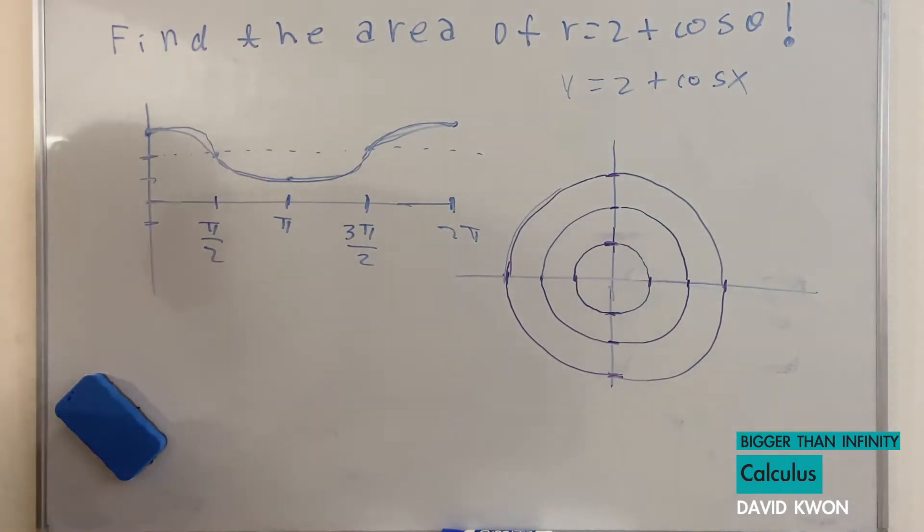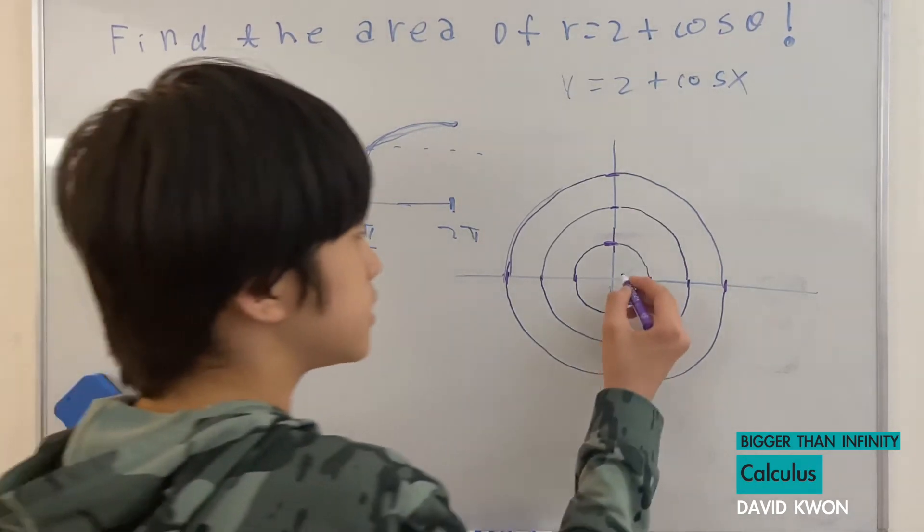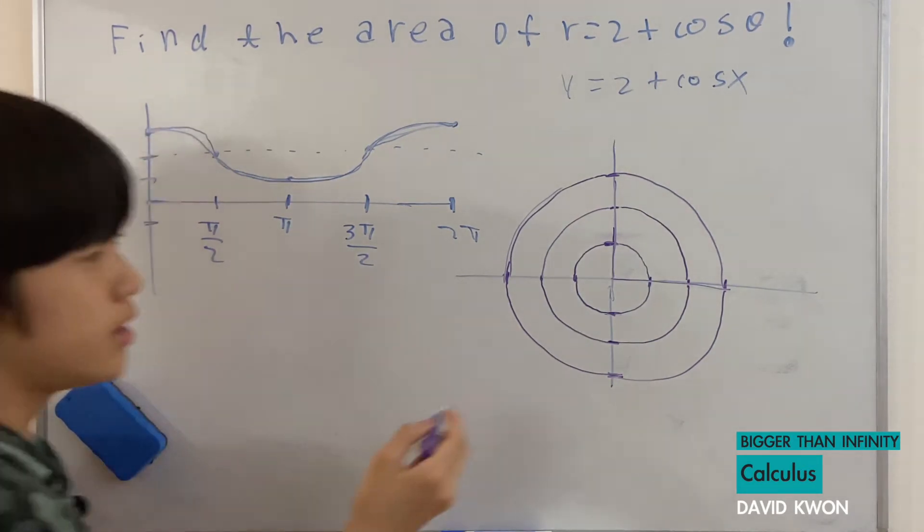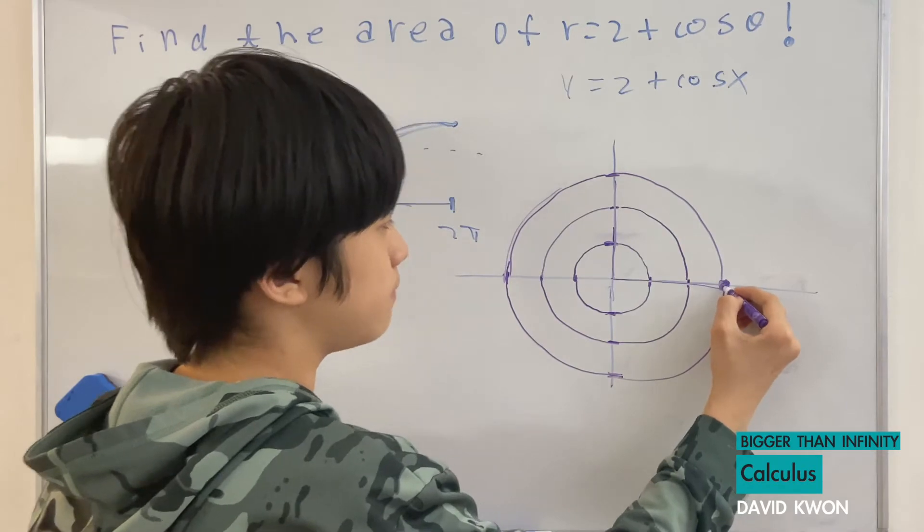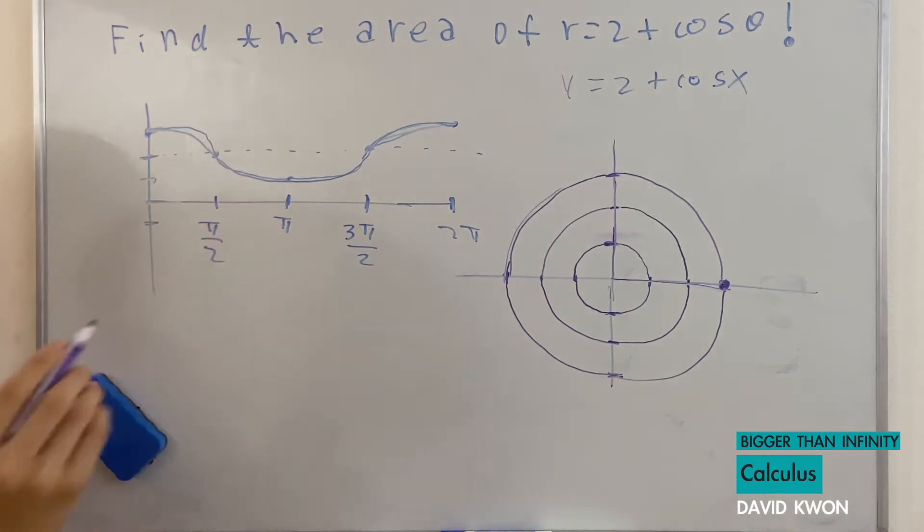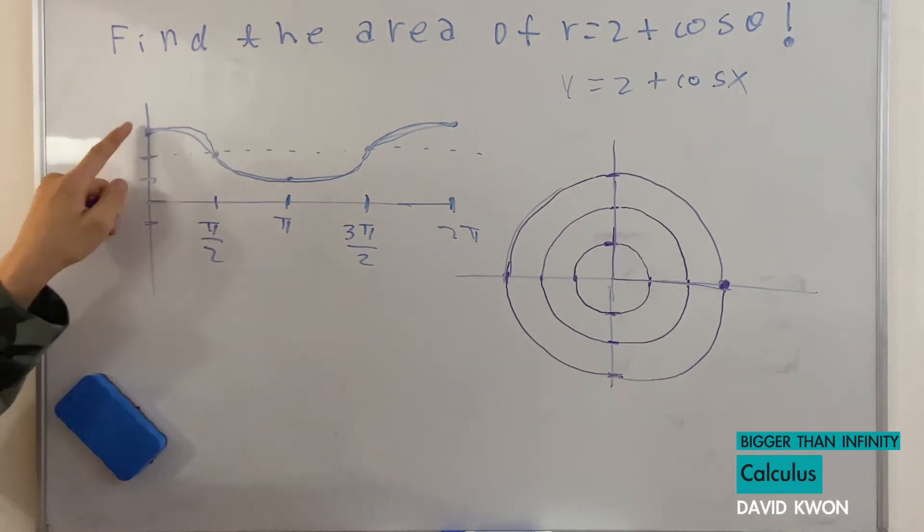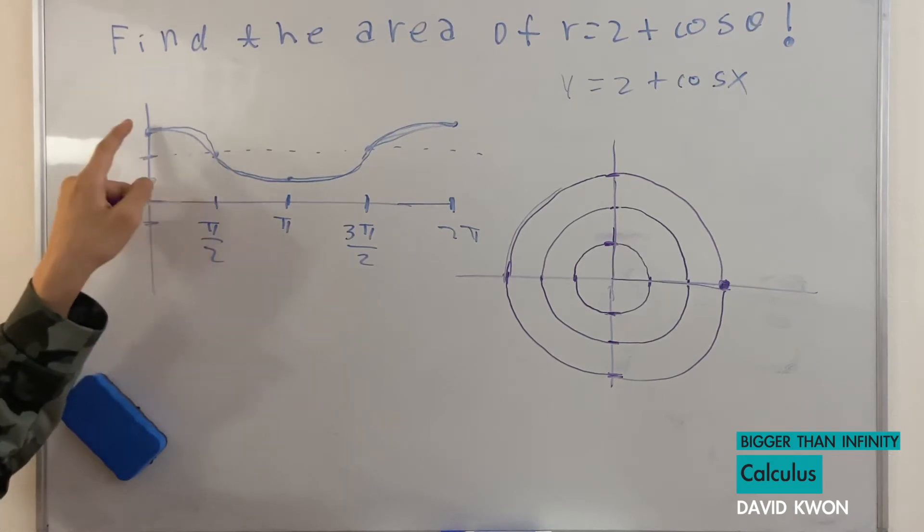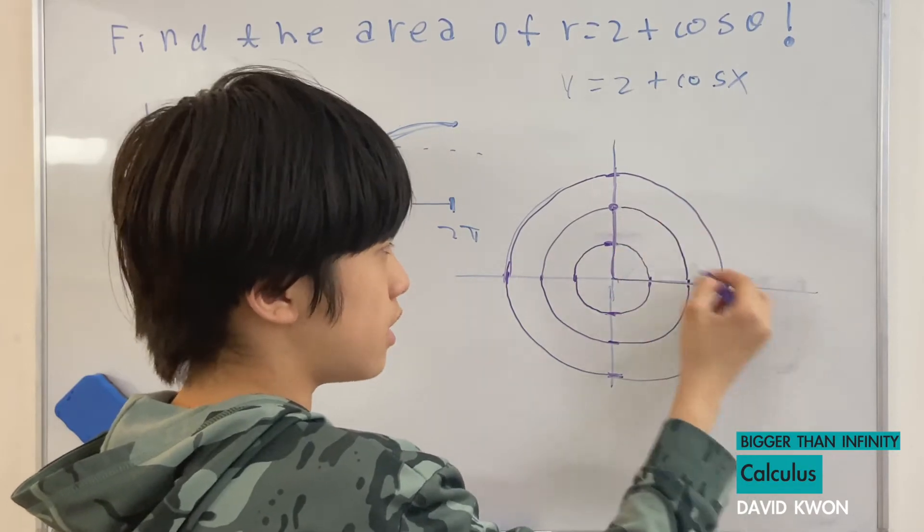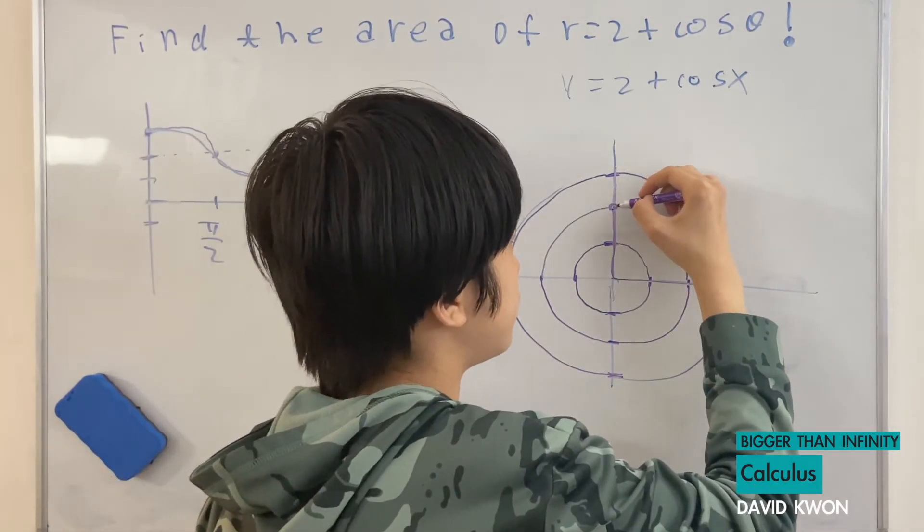And now this is when we get our answer. So when theta equals 0, which is 0 to pi over 2, we start from 0 of 3. We start from here, which is when theta equals 0. When theta equals pi over 2, it moves from 3 to 2, which is pi over 2 of 2. So from this dot, it goes to this dot. So let's trace it.